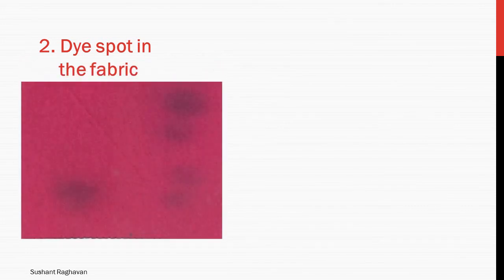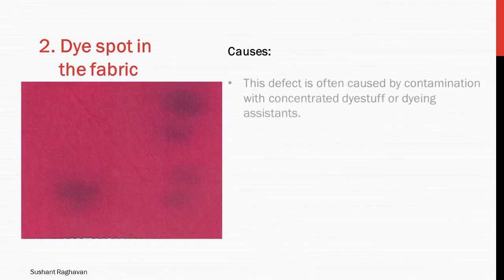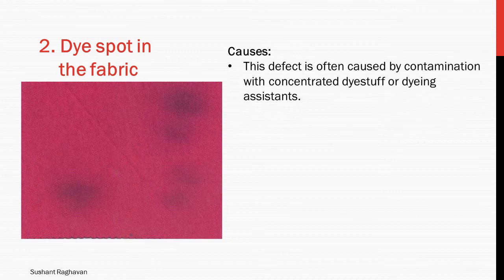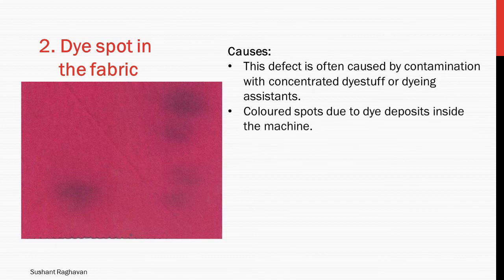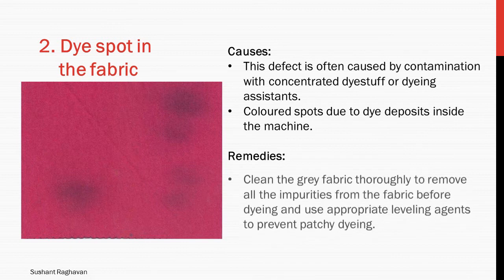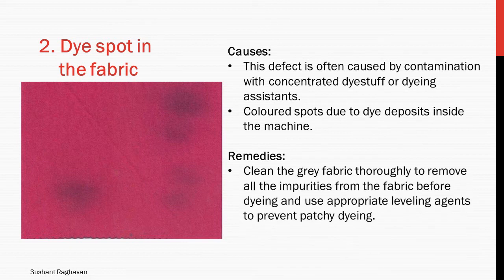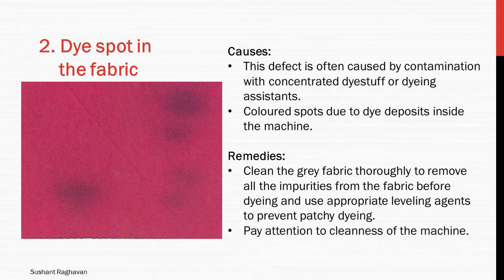Dye spot in the fabric. Causes: this defect is often caused by contamination with concentrated dye stuff or dyeing assistants. Colored spots due to dye deposits inside the machine. Remedies: clean the grey fabric thoroughly to remove all impurities before dyeing, and use appropriate leveling agents to prevent patchy dyeing. Pay attention to cleanliness of the machine.